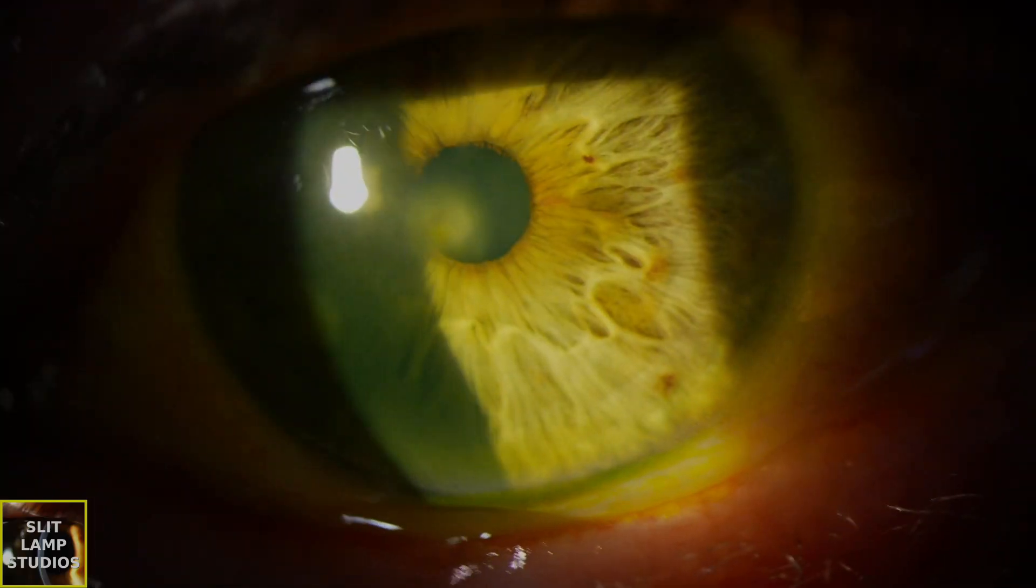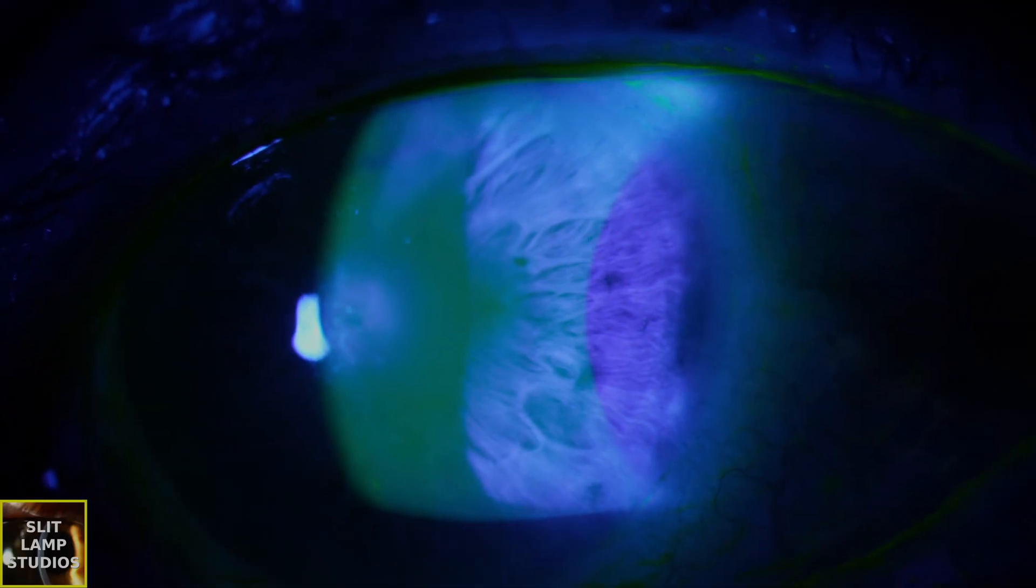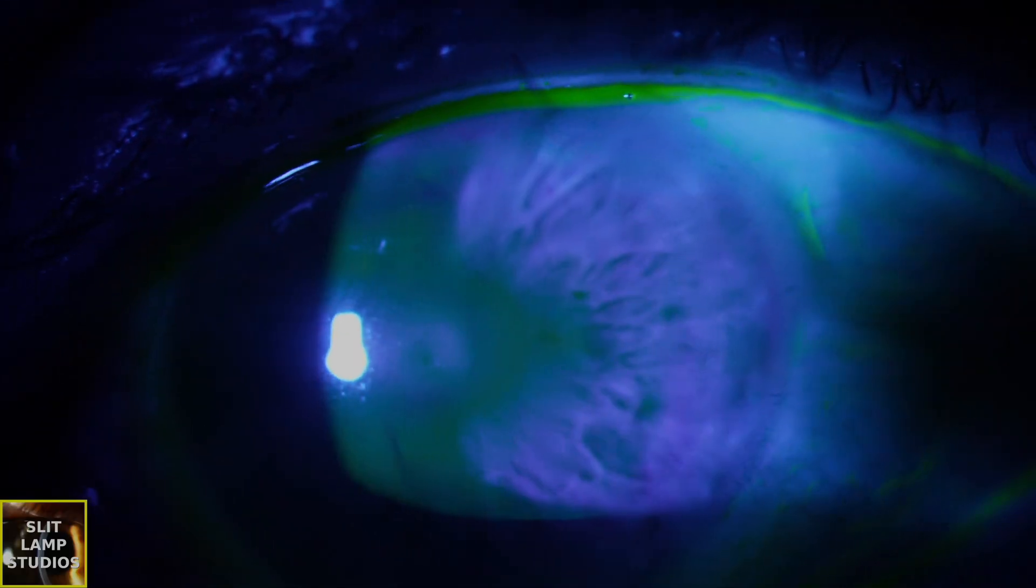So one way of doing that is topical steroids by reducing ocular surface inflammation, ensuring that the patient has prophylaxis against any further episodes of herpetic keratitis.